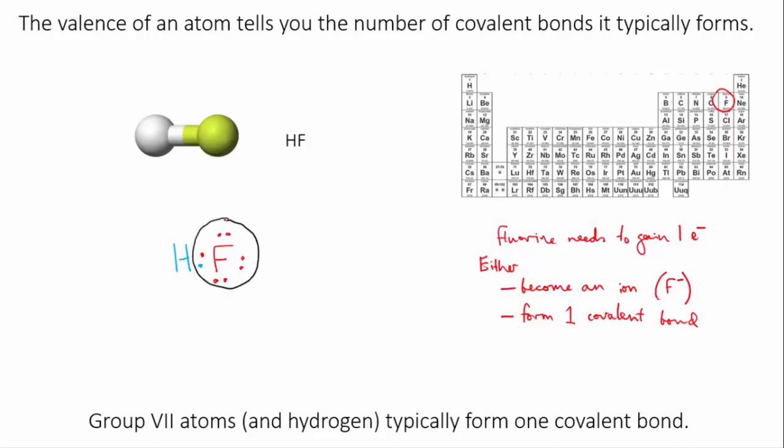Fluorine has access to the extra electron from the hydrogen, which means it has 8 electrons in its outer shell, and the hydrogen has access to the extra electron from fluorine, so it has 2 electrons in its outer shell, which for hydrogen is a full shell.